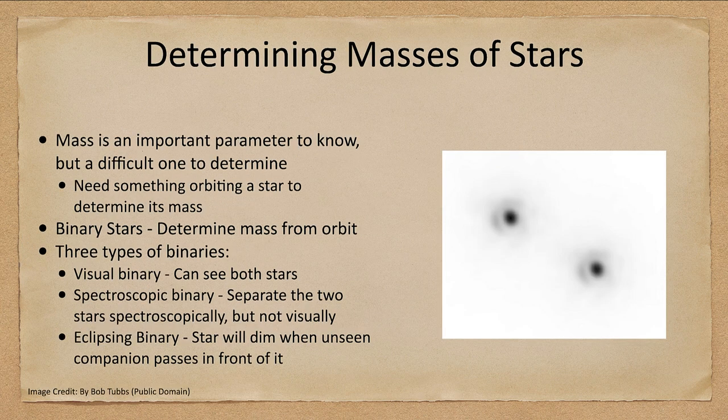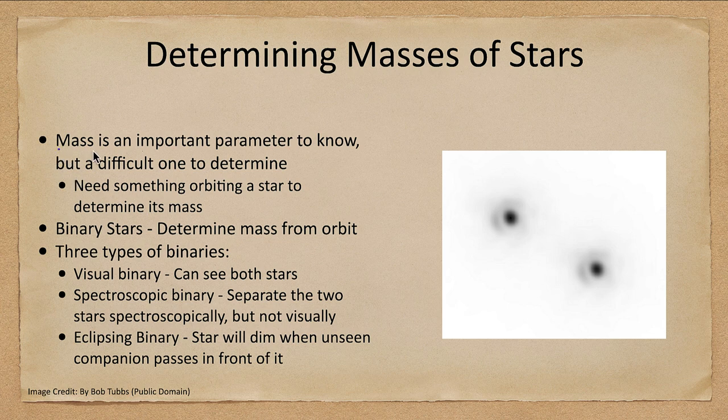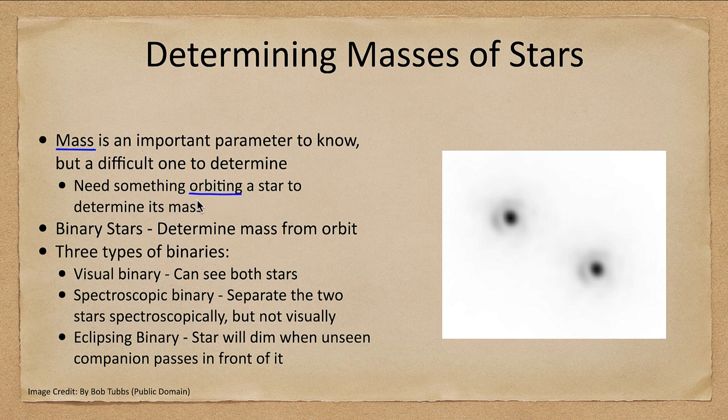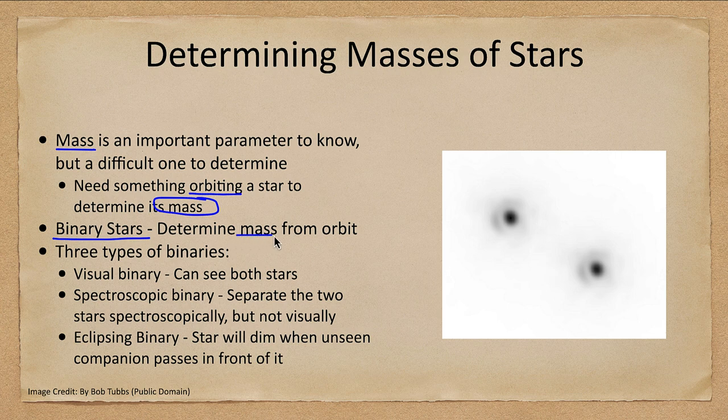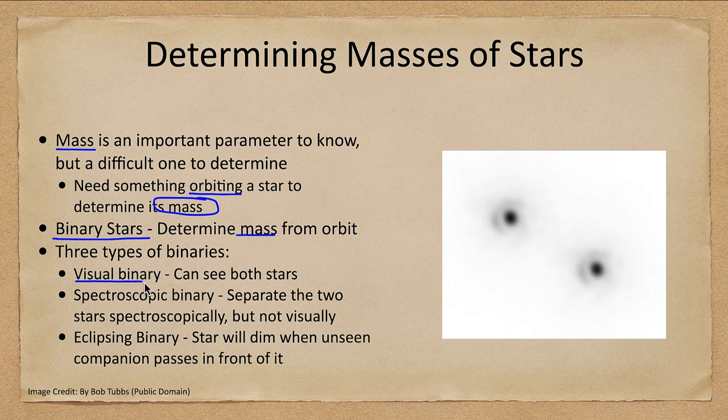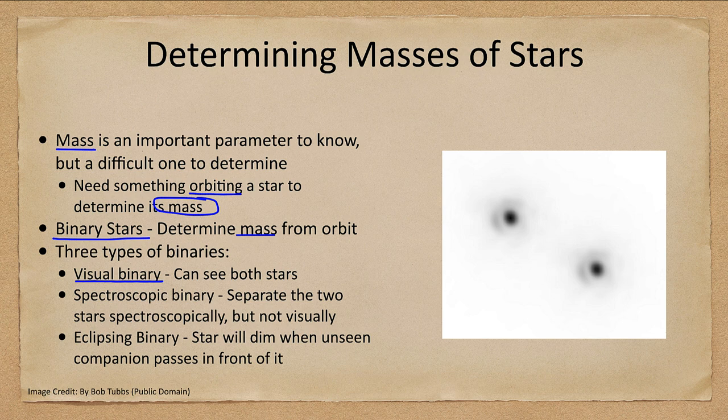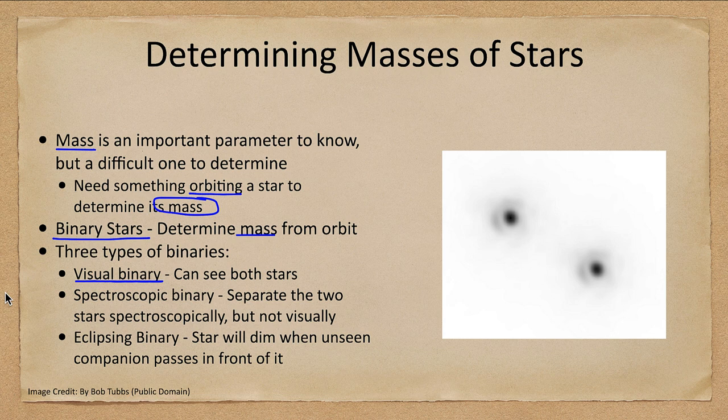So how do we determine masses of stars? Well, mass is a hard thing to determine and that's because we need something orbiting a star so that we can figure out its mass. In order to get this we look at things like binary stars. If we have a binary star then we can determine the mass from the orbit, and we have three types of binaries we want to discuss. There is the visual binary which is shown here where you can actually see two stars in an image, and if you watch over long periods of time you could see that they are slowly orbiting around each other.